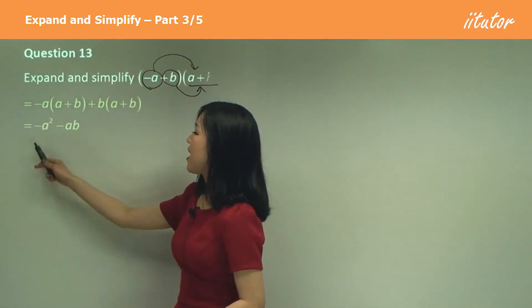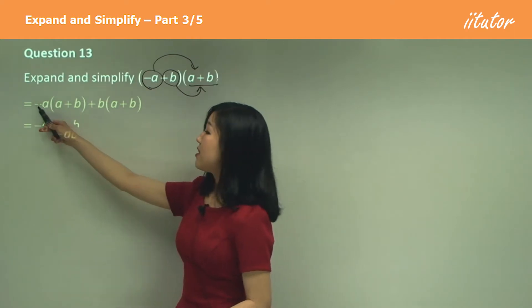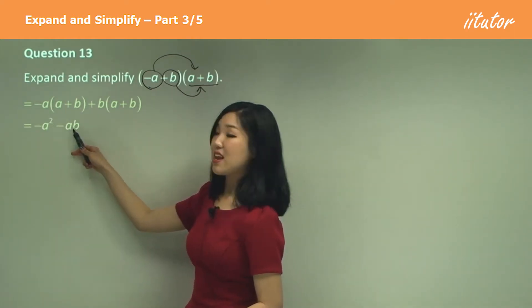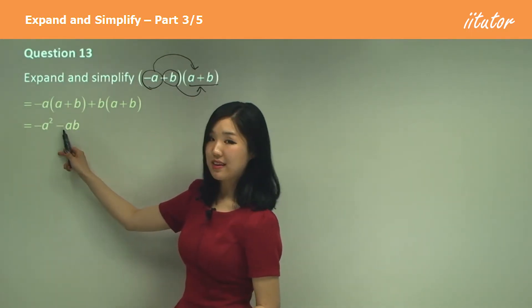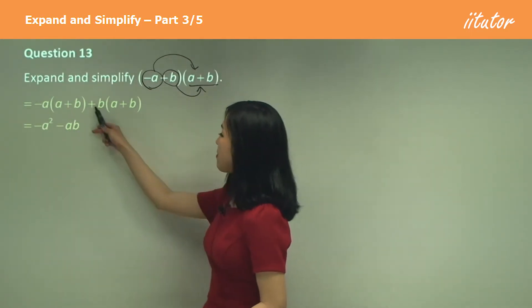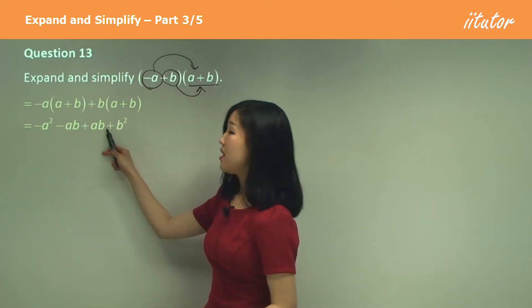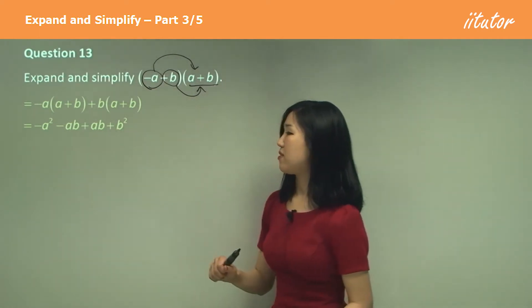Negative a times a is negative a squared. Negative a times b is negative ab. Again, be careful with the signs. Negative positive makes a negative. And then b times a is ab. And b times b is b squared.